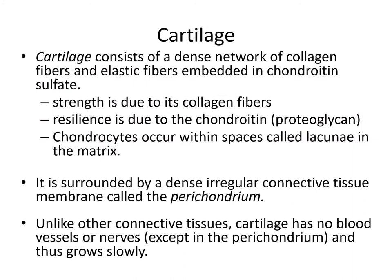Cartilage is a support tissue, but it also forms slippery surfaces within synovial joints. It consists of a network of collagen fibers and elastic fibers embedded within chondroitin sulfate, which forms a very dense gel. The collagen fibers provide strength, elastic fibers provide elasticity, and the chondroitin resists compression. Chondrocytes are the cells that maintain this material, found within little spaces called lacunae. Around the outside of cartilage, we have a dense irregular connective tissue known as the perichondrium — peri means around the outside.